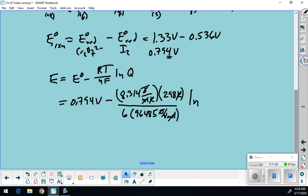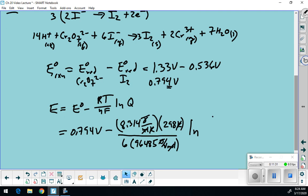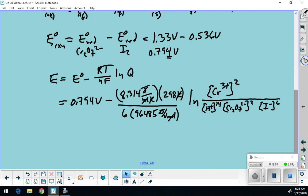But now what's my Q? I have to look at my reaction to decide what my Q is. So my Q would be concentration of chromium squared divided by what? The concentration of H plus to the 14th, concentration of dichromate, concentration of I minus to the 6th. Everyone see where that's coming from? That's coming from my coefficients and my balanced equation.